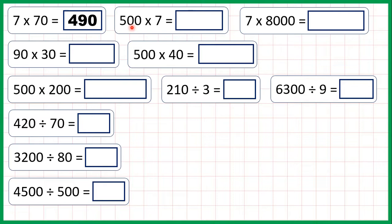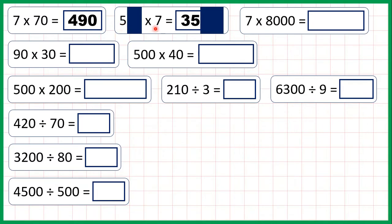500 times 7 is 3,500, because 5 times 7 is 35, and then if we have two end zeros in a multiplication question, we need two end zeros in our answer.